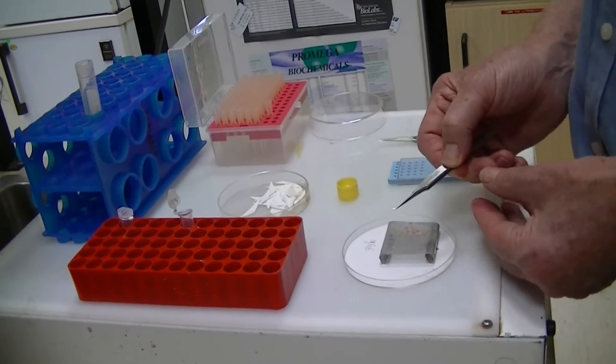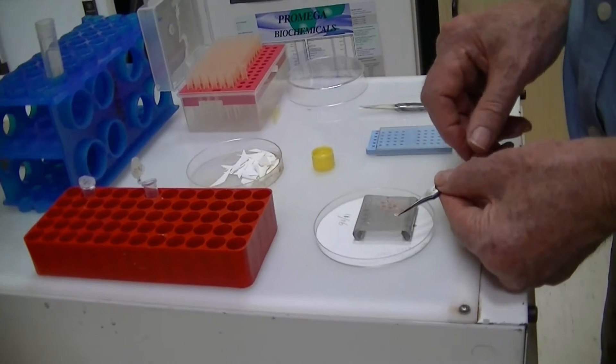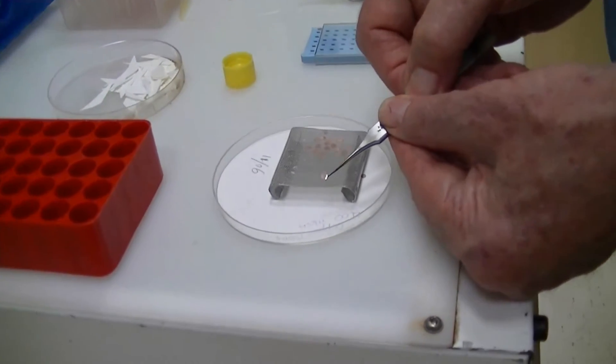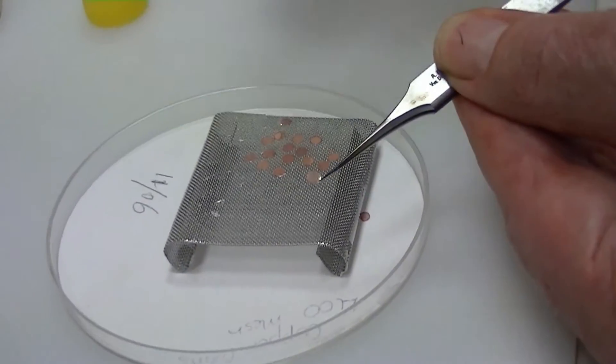To prepare samples for examination in the electron microscope, we place them on a copper grid which is around 3mm in diameter. You can see them here on this piece of stainless steel mesh.